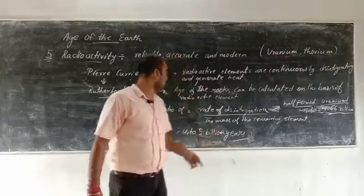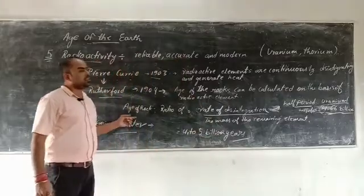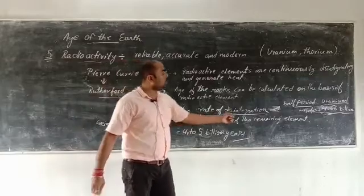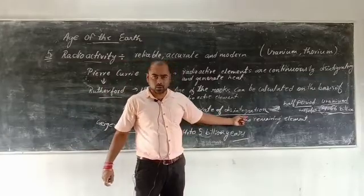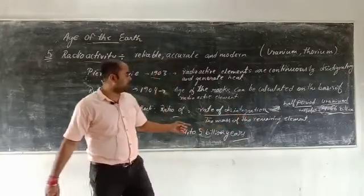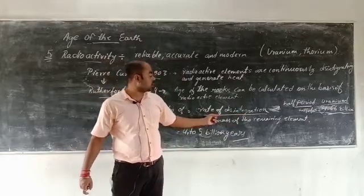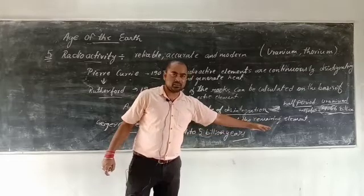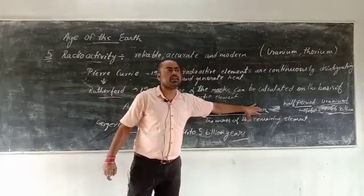The age of any rock can be calculated with the ratio of the rate of disintegration and the mass of the remaining element—how much it has disintegrated and how much is left.